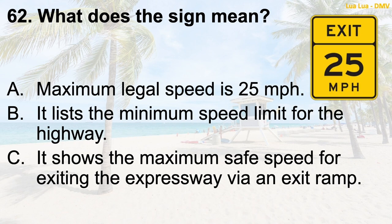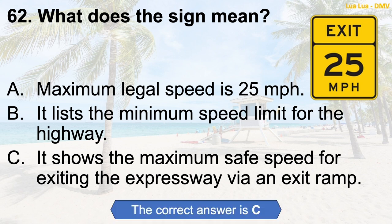Question 62: What does the sign mean? The correct answer is C: It shows the maximum safe speed for exiting the expressway via an exit ramp.